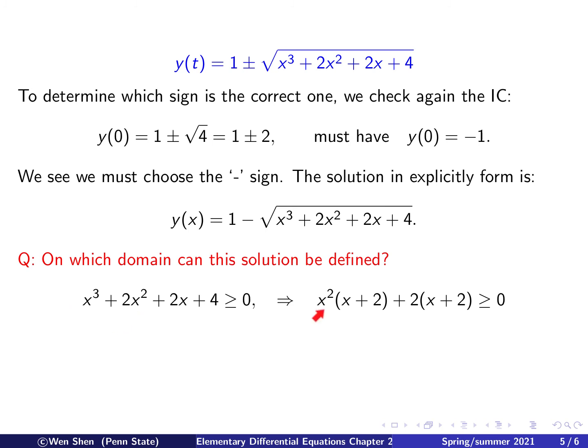And then, combining the last two terms, taking out 2, I will have again (x plus 2). Now I see (x plus 2) is a common factor. Again, taking x squared out, then I will have (x squared plus 2) times (x plus 2) is bigger than 0. Now, using the fact that x squared plus 2 is always bigger than 2 and positive, then this becomes (x plus 2) is bigger than 0, which means x shall be bigger than negative 2. So that will be the domain for this solution to be defined.